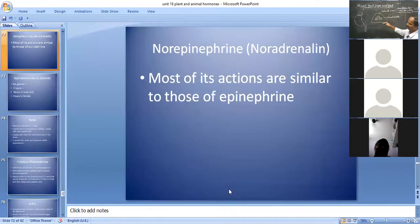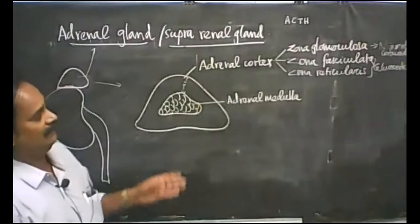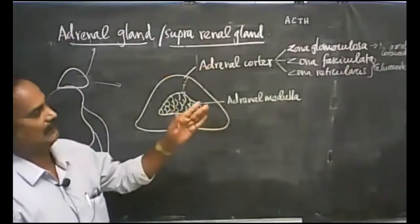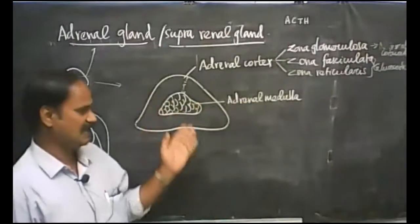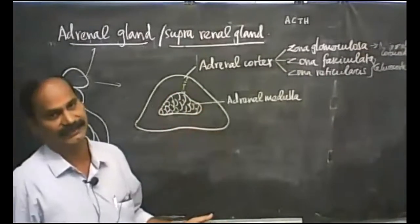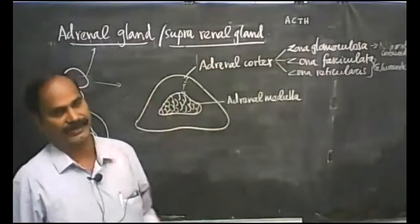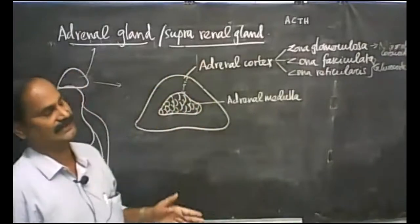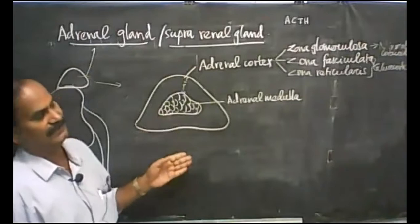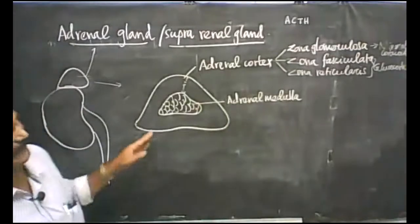For exam purposes, if they ask about adrenal gland, you are supposed to write both adrenal cortex and adrenal medulla. If they ask adrenal medulla alone, write that it consists of chromaffin cells, which secrete adrenaline and norepinephrine, and describe the functions including emergency hormone, flight-fright-fight hormone, and other roles during emergency conditions. Norepinephrine role is similar to that of adrenaline.